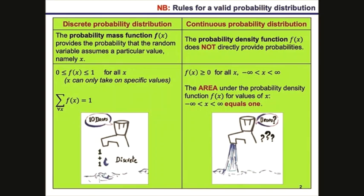The area under the probability density function is equivalent to the probability of the defined random variable x. So if we find the total area under the probability density function over all possible values of x in the defined interval, then we are finding the total probability for all possible values of x, which is equal to 1. This condition is similar to that of the discrete probability distribution, where we take the sum of all the probabilities for all specified values of x, which is also equal to 1.